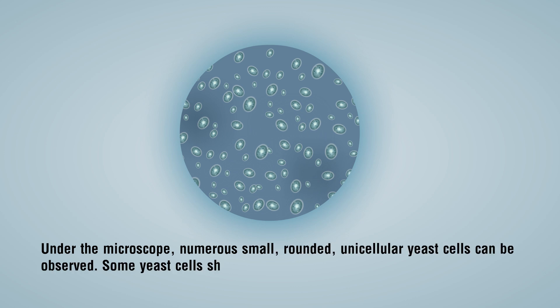Some yeast cells show bulb-like projections, or buds, while others may form chains of 3 to 4 cells.